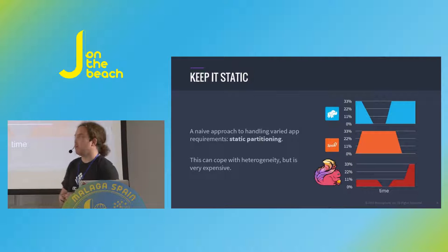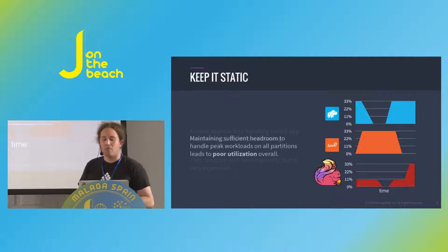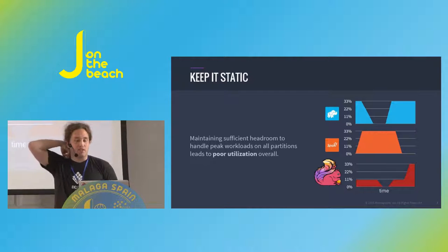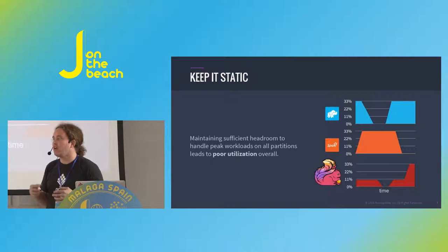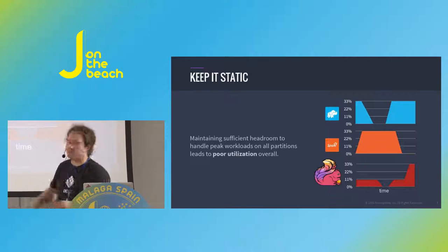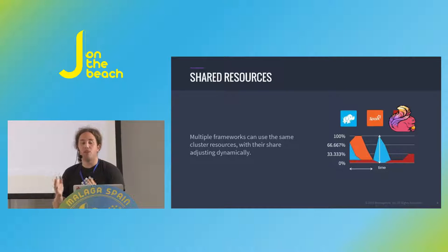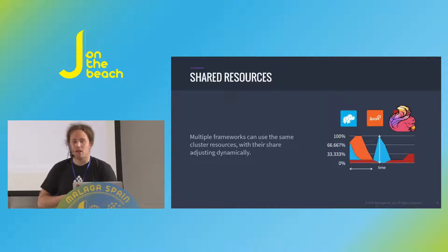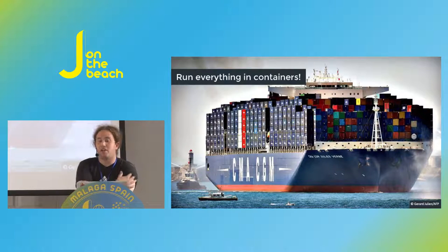The second problem of static partitioning is that you waste a lot of resources. Different applications have different usage profiles. My Hadoop job mostly runs overnight; my Spark streaming job has a different profile; my Flink cluster has a different profile. You end up having to provision full virtual machines or even full physical machines for each cluster. What we'd much rather have is the ability to share resources across those frameworks and achieve much better utilization.